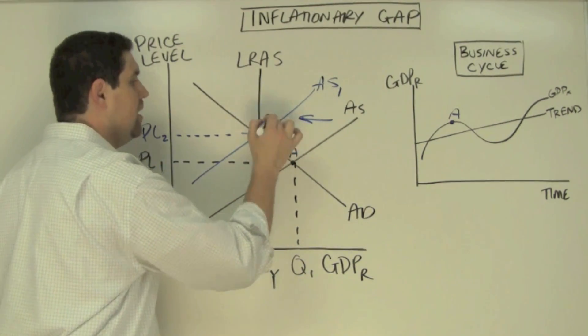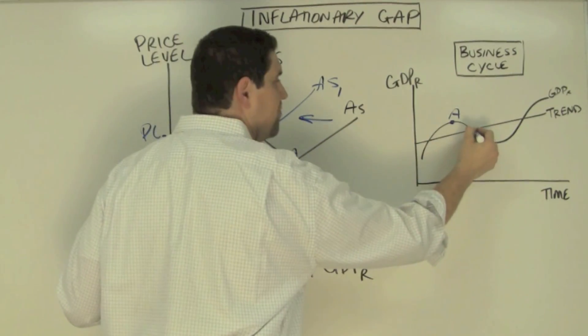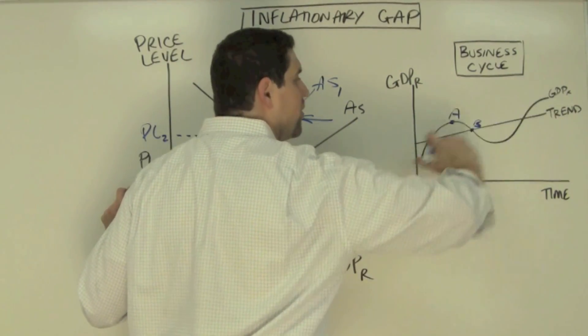So if we call this point, point B, that's just like over here, an idea of point B, right? The trend line or the full employment line.